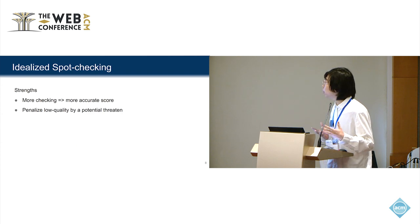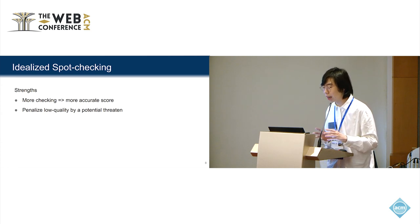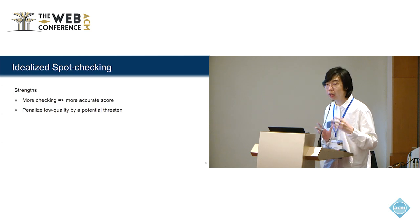Obviously, if we check more fraction of the tasks, we will get a more accurate score with the spot-checking mechanism. And even if we check only a small fraction of the tasks, we can still penalize low-quality agent's reports by applying a potential threat.